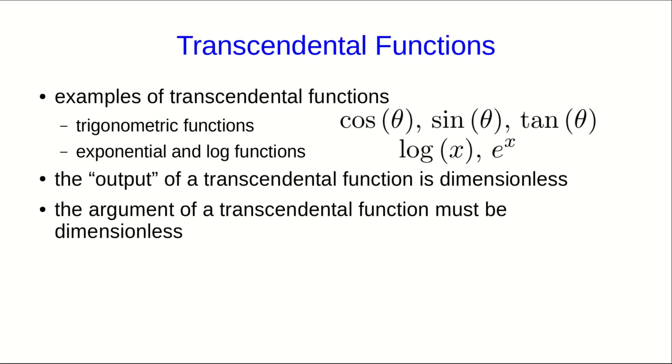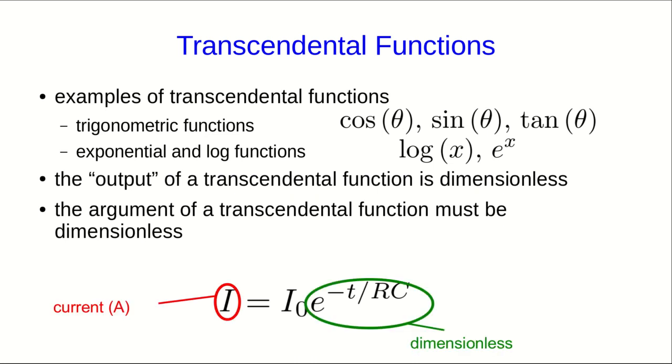So let's look at an example of that from PHYS 12.04. This is the current as a function of time in a type of circuit that we'll see. So this quantity I is a current. And we know that this exponential must be dimensionless, and so I0 must also be a current. We also know that the argument of the exponential must be dimensionless. T is a time, and so for that argument to be dimensionless, this quantity RC must also be a time.